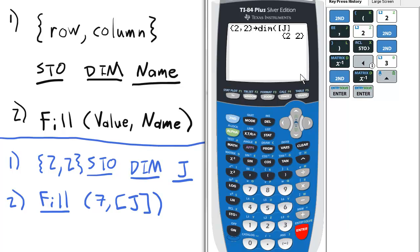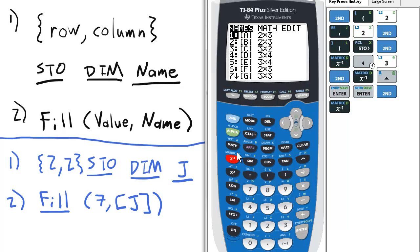Now from there we want to fill matrix J with each element as a certain number. I'm feeling lucky, so let's choose seven. So, we're going to go to the matrix menu, go to the math, and I want to fill.